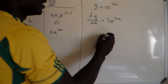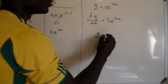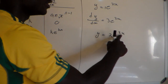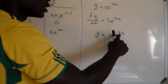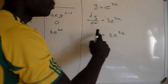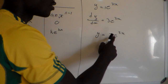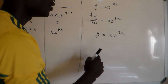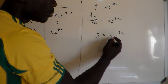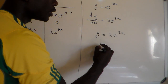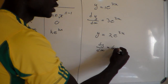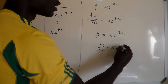Even if you have y equals 2e to the power 3x, we multiply the coefficient of the exponent by the coefficient of e. So 3 multiplied by 2 equals 6. Therefore dy/dx, the derivative of this number, is going to be 6e to the power 3x.